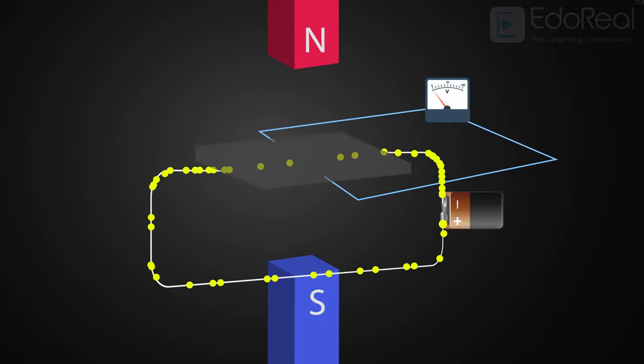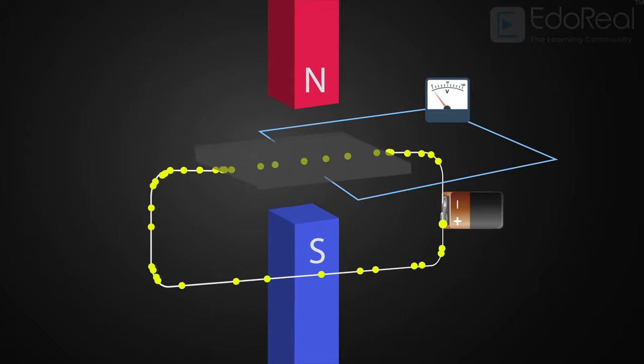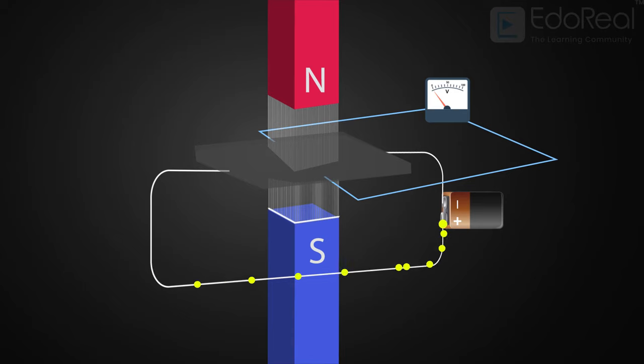Now arrange two magnets perpendicular to the conductor so that the magnetic field passes from north to south. What Hall measured is that the path of the electrons through the conductor starts to curve. Electrons get pulled to one side of the conductor.